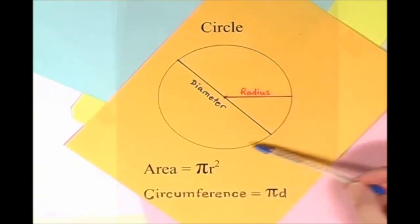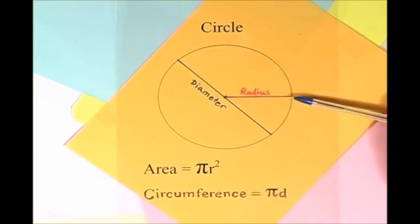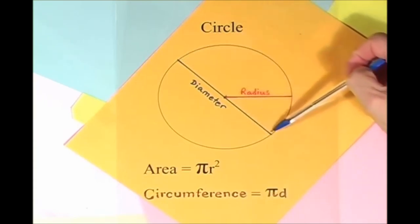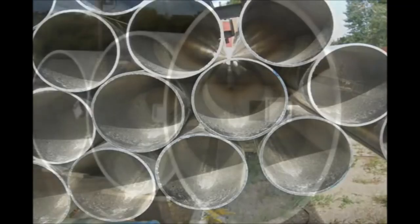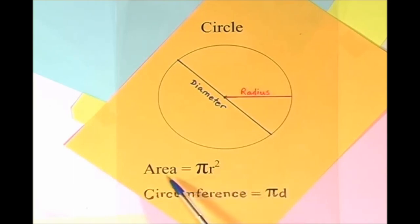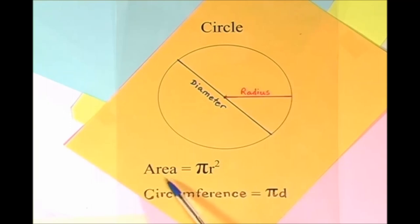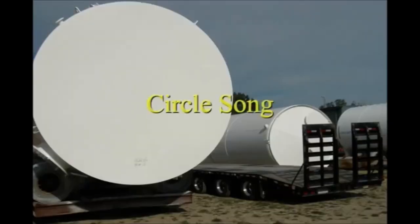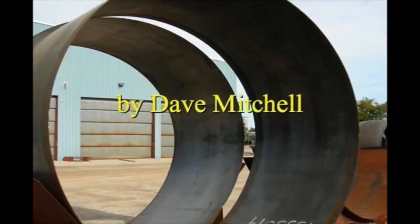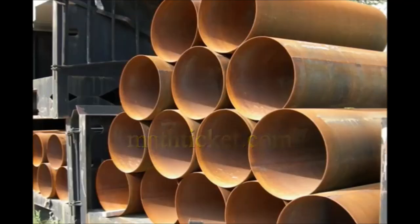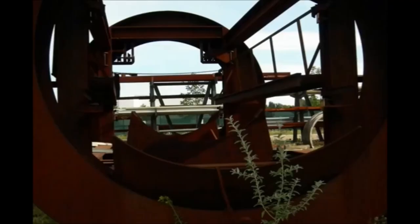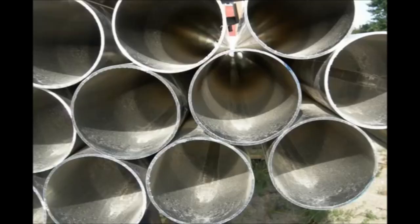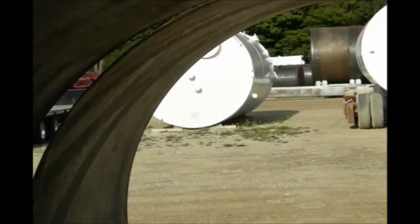Here is a circle, it knows how to get around. It has a radius from center to rim. And its diameter's a line that goes from side to side while passing through the center, now isn't that simple. Pi r squared sounds like area to me, when I need a circumference, I'll just use pi d. Pi r squared sounds like area to me. Here is a circle, it knows how to get around. It has a radius from center to rim.